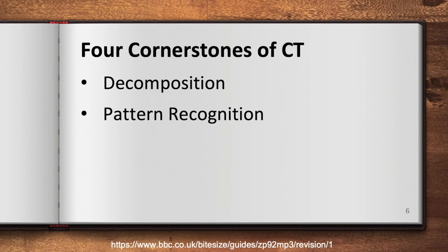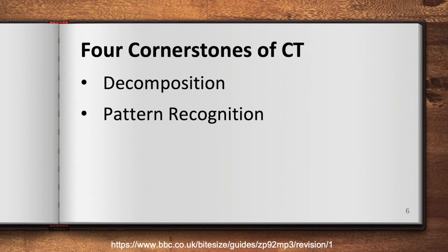Another cornerstone of computational thinking is pattern recognition, which involves finding the similarities or patterns among small, decomposed problems that can help us solve more complex problems more efficiently. Going back to our cake example, we can see that recipes for cakes are similar because of patterns. Baking is a science, so we need precise amounts of specific ingredients, ingredients that are added at specific times, and they all have a specific temperature and period of time they are baked.